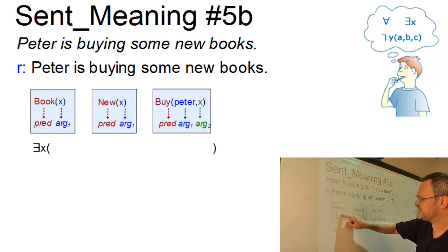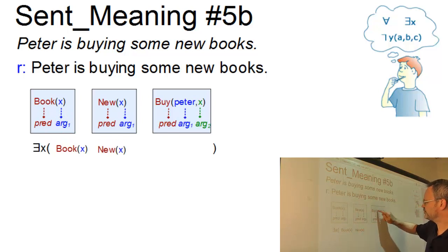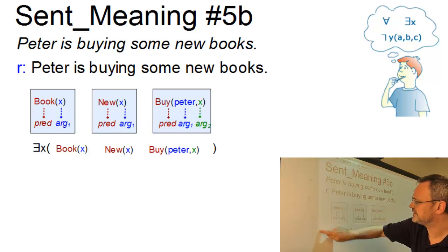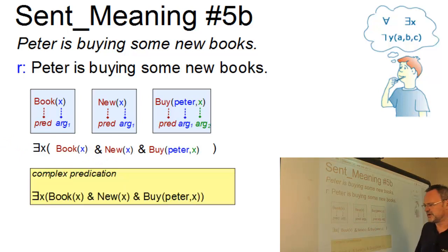And as a formula, we get, there is at least one element x such that, and now we link them all by and again. So, we get the final solution. There is at least one element x such that x is a book and x is new and Peter buys x.